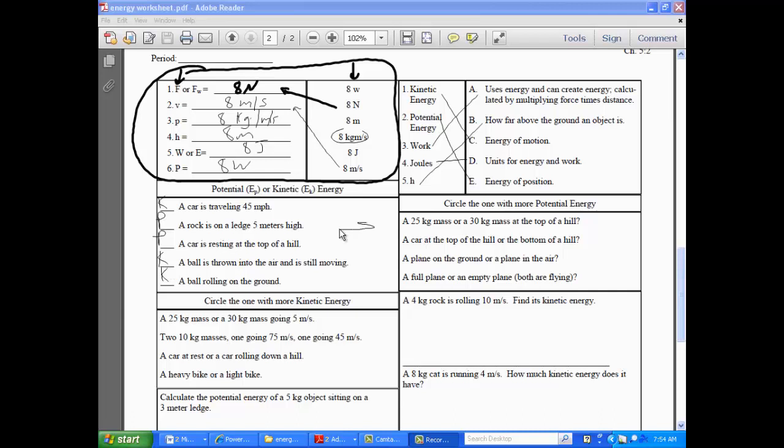All right. Let's move over here. Circle the one with more potential energy. So a 25 kilogram mass or a 30 kilogram mass on top of a hill. Mass times gravity times height. So, therefore, the one with the higher mass is going to have more potential energy. A car at the top of the hill or at the bottom of the hill? Car on the top of the hill. It's got an elevation. It's got a height. A plane on the ground or a plane in the air? Plane in the air. In a full plane or an empty plane, both are flying? Full. It's got more mass.